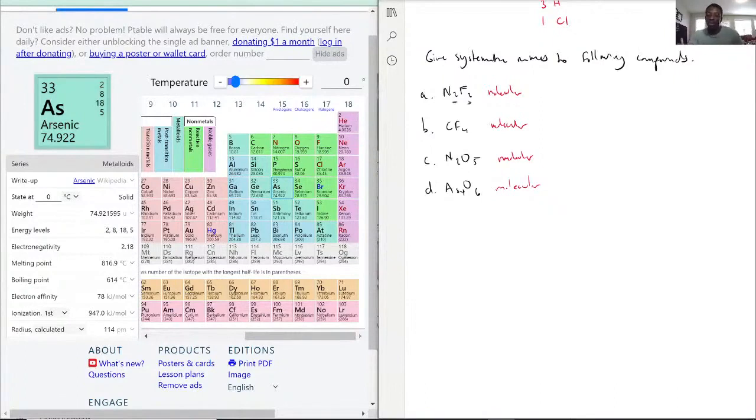So starting with N2F2, this would be dinitrogen difluoride. And you still end with IDE because that is what you do for the second half. You still end with IDE. You always drop the end. It's not going to be fluorine anymore. It's going to end with IDE. So dinitrogen difluoride.